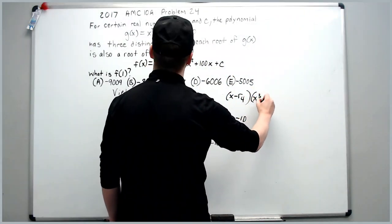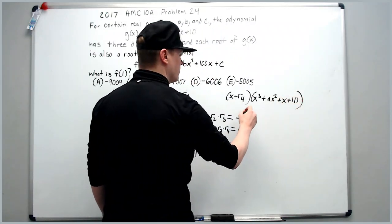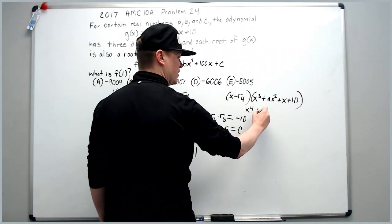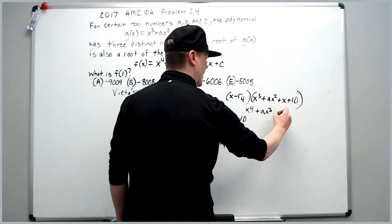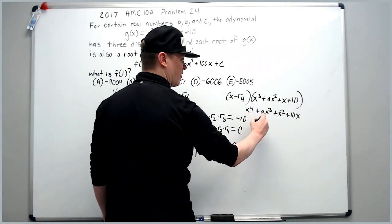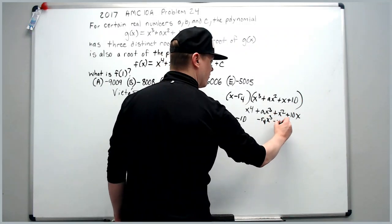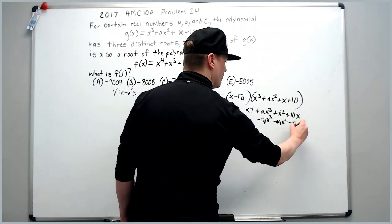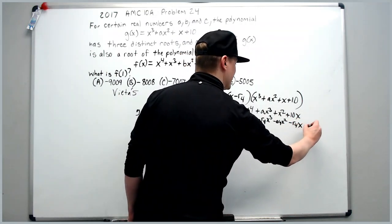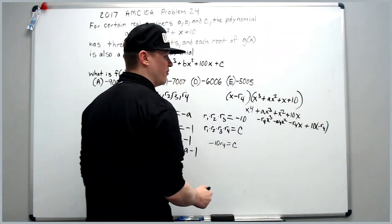So we're going to get x cubed plus ax squared plus x plus 10. We will multiply this to get x to the fourth distributing the x plus ax cubed plus x squared plus 10x, then distribute the negative r4, negative r4 x cubed, negative a r4 x squared, negative r4 x, and then plus, or actually it's minus 10 times, you just say 10 times negative r4.